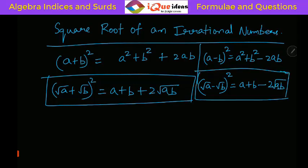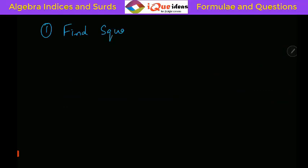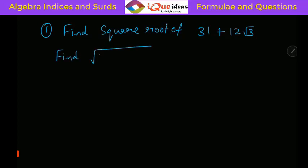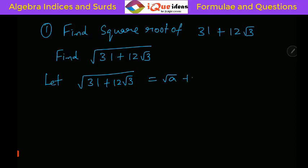We will use this. Let me show you with a question. Let us say the question asks: find the square root of 31 + 12√3. We have to find √(31 + 12√3). Let us assume that √(31 + 12√3) equals √a + √b.